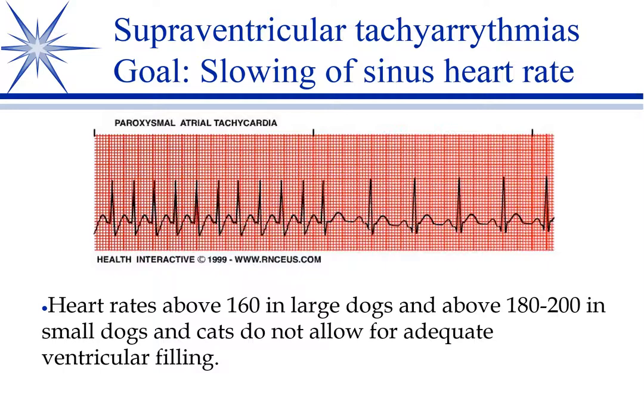Why is this a problem? When you reach a certain high heart rate, you're not allowing enough time for proper filling of the ventricles. Systole is where you push the blood out; diastole is where blood flows back into the ventricles. You're not allowing enough time during diastole for proper filling. For large dogs, we want a heart rate less than 160 — it's much less defined for small dogs and cats, and cats can run unusually high and still do fairly well.